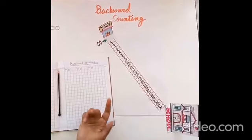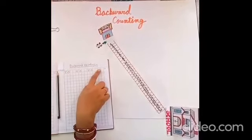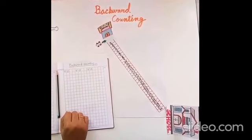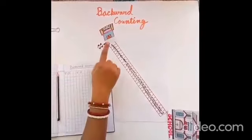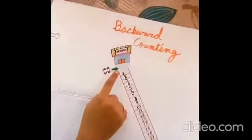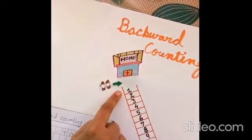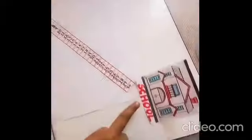Children, now we will learn to write backward counting from 30 to 1. This is your home and this is our school.